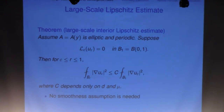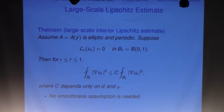We proved this interior large-scale Lipschitz estimate yesterday using the compactness method. Once you get this estimate, you can combine it with a small-scale estimate by a blow-up argument — following from the classical result — to obtain full-scale Lipschitz. We do not need any smoothness conditions on the coefficient; just bounded and measurable, elliptic, and periodic.